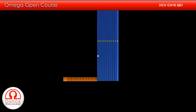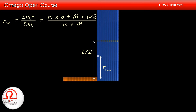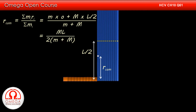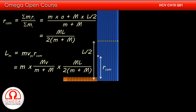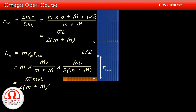The distance of the centre of mass from the line of motion of the particle is (m·0 + M·L/2) / (m + M), which simplifies to ML / (2(m + M)). Therefore the angular momentum of the particle about the centre of mass is m times its velocity with respect to the centre of mass times the perpendicular distance. Putting the values: m · Mv/(m+M) · ML/(2(m+M)), which simplifies to M²mvL / (2(m+M)²).